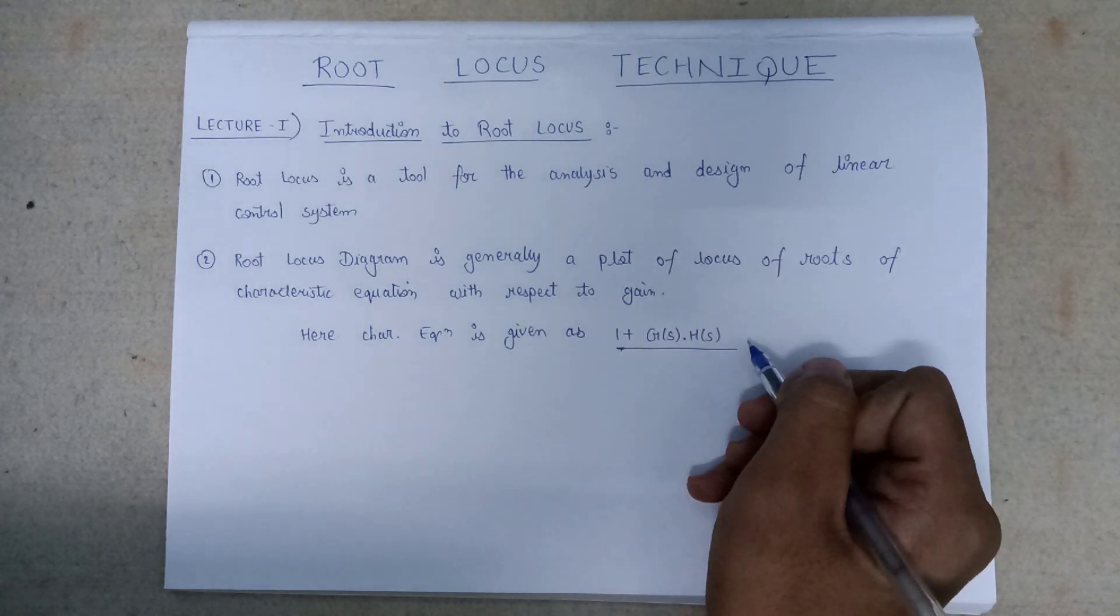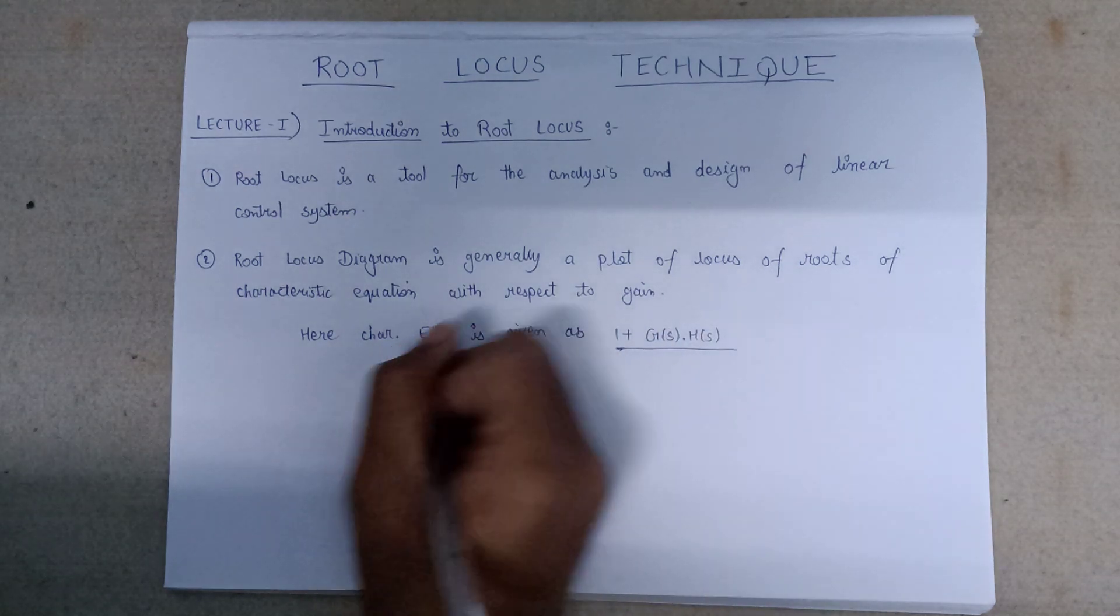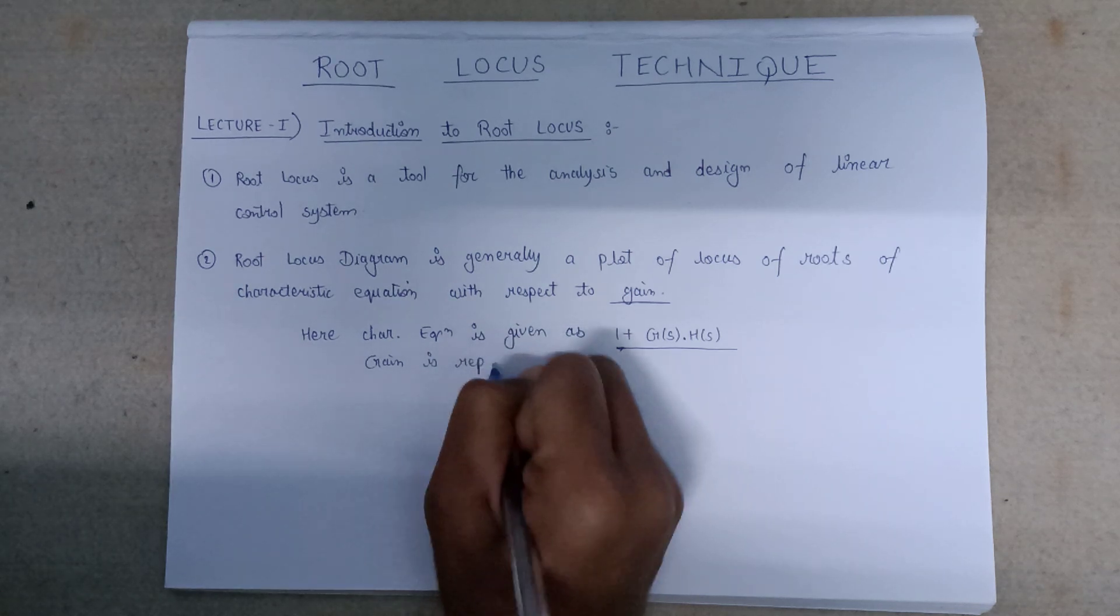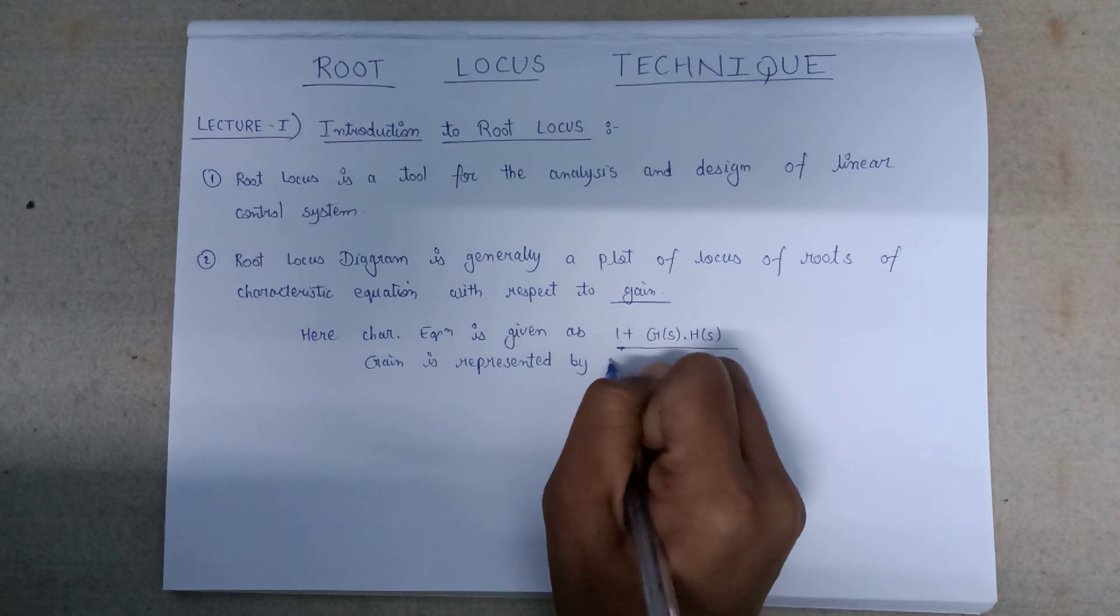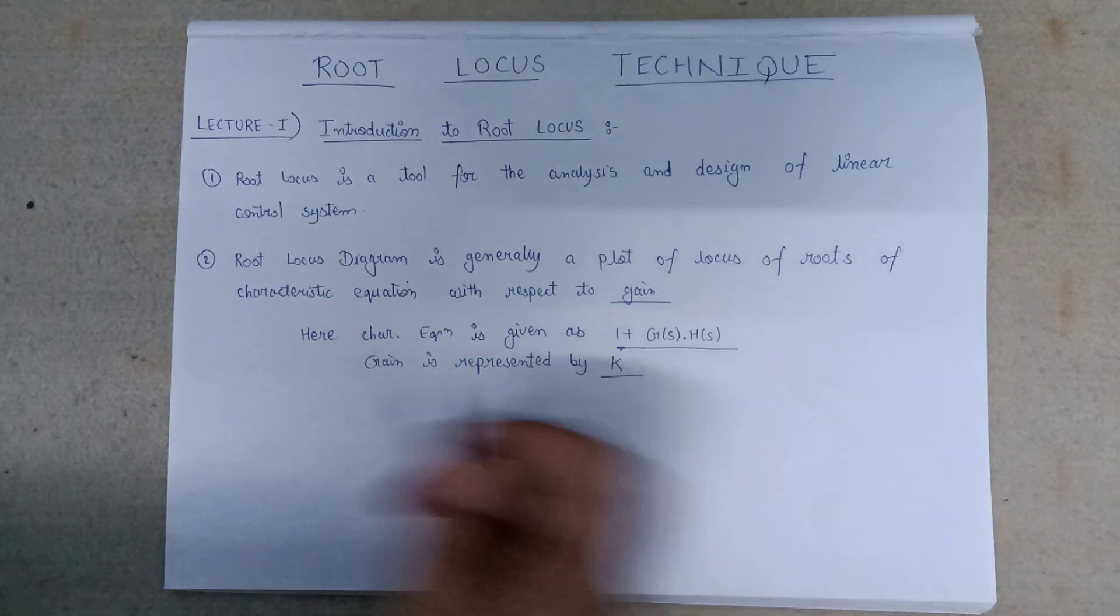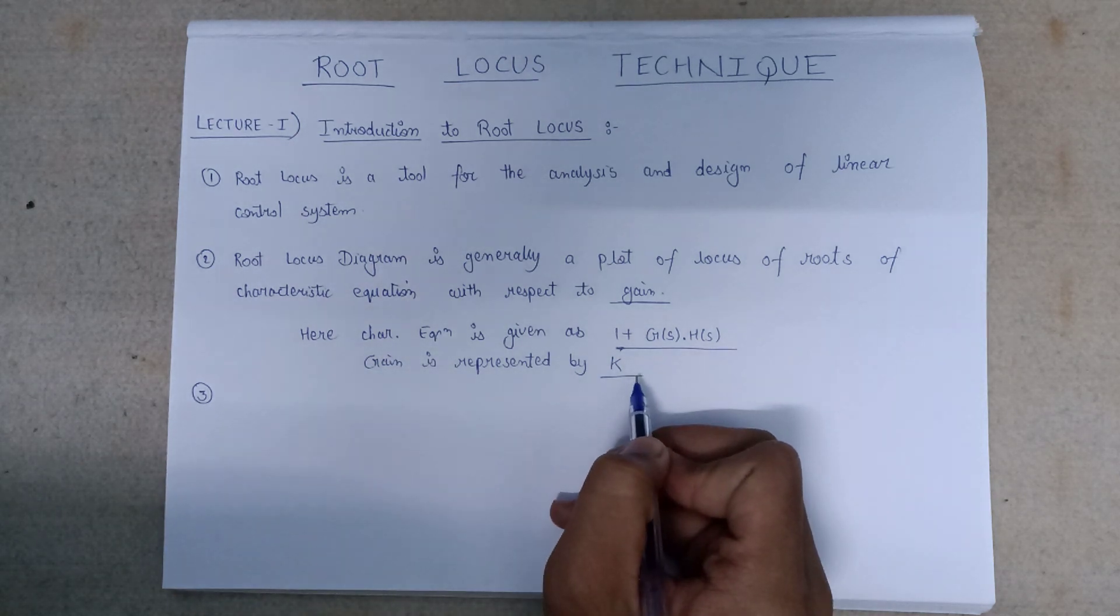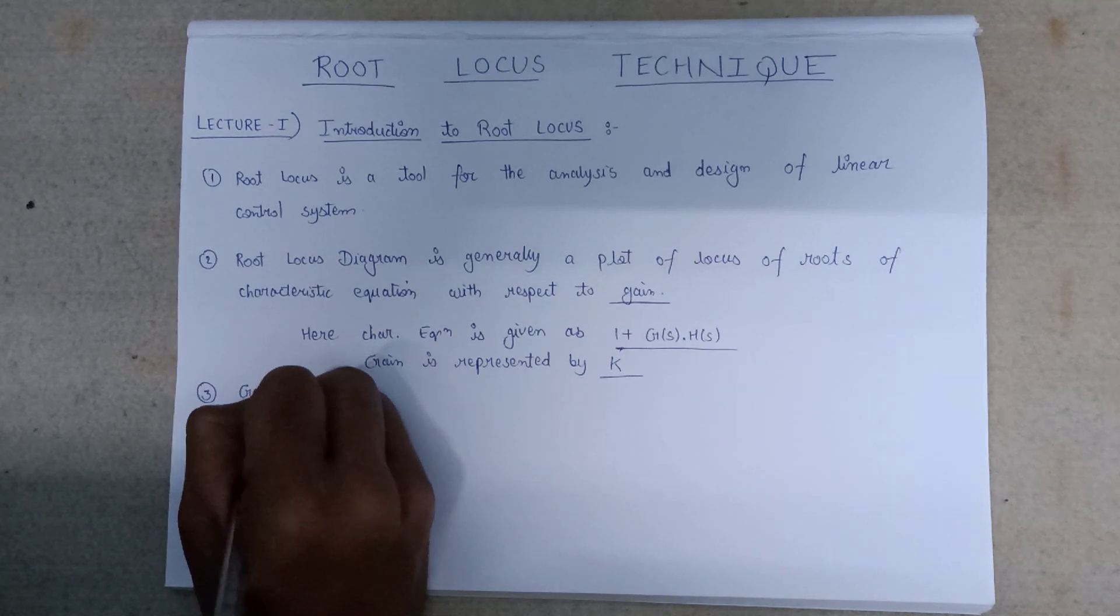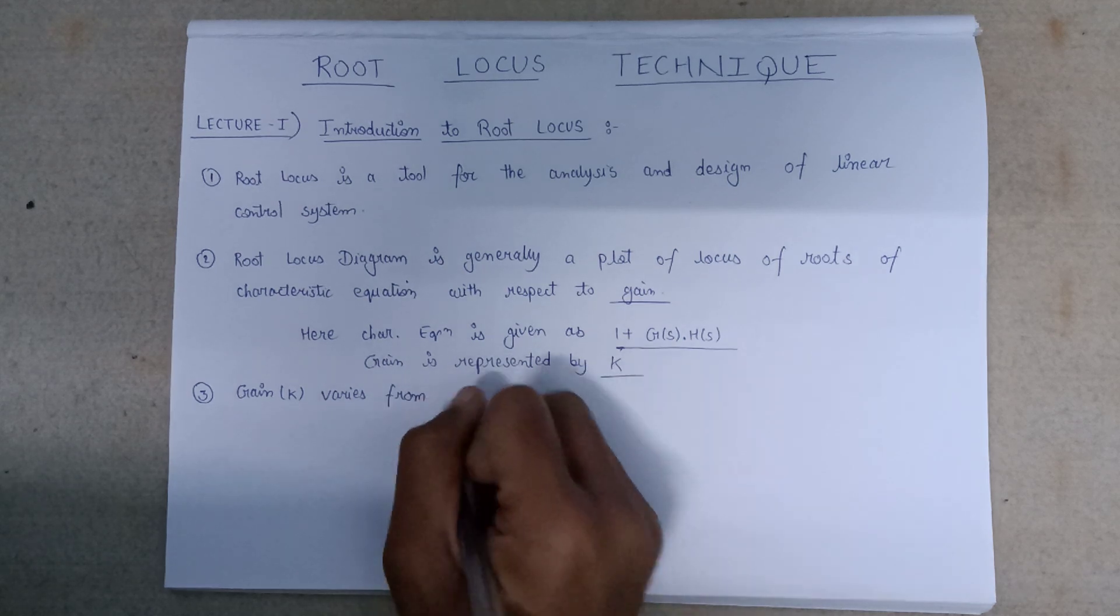And here the gain is represented by the symbol K. In case of root locus, the value of gain that is represented by K varies from 0 to infinite. So gain (K) varies from 0 to infinite.